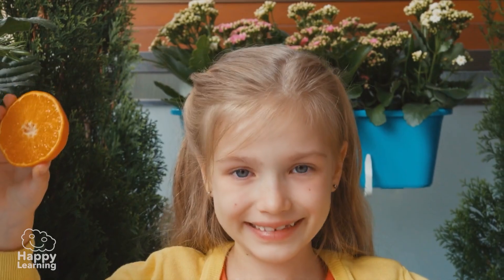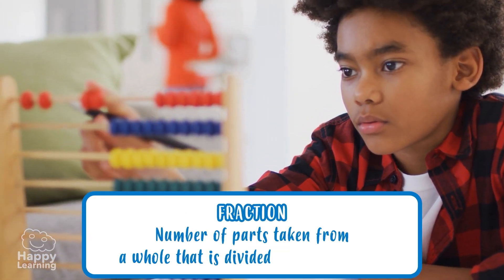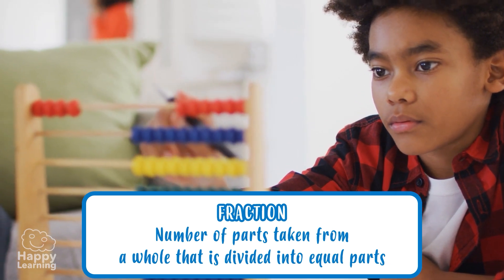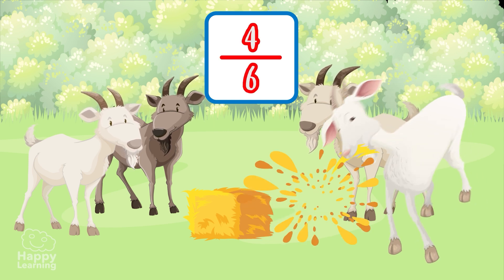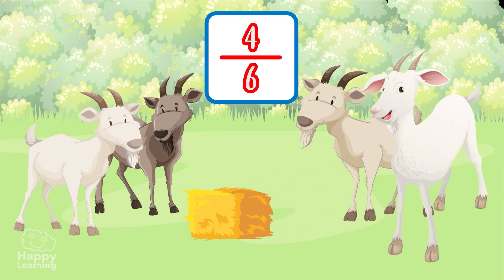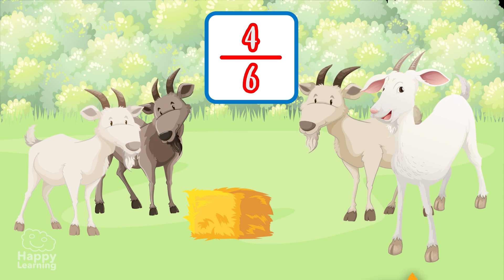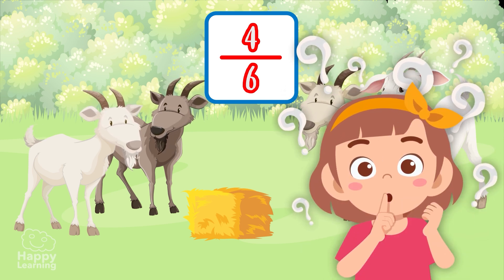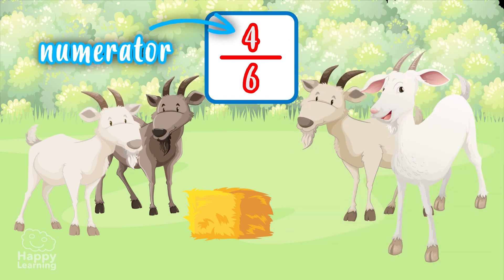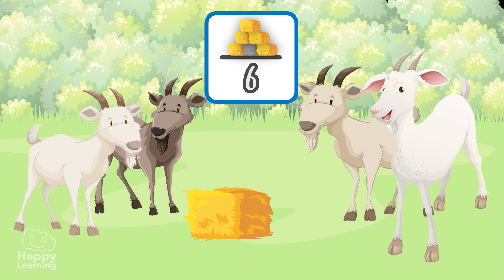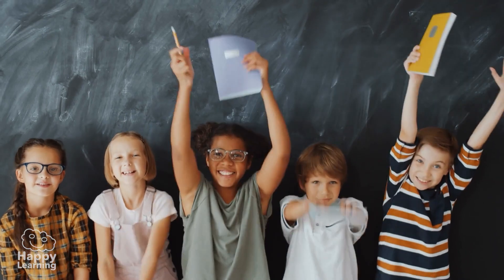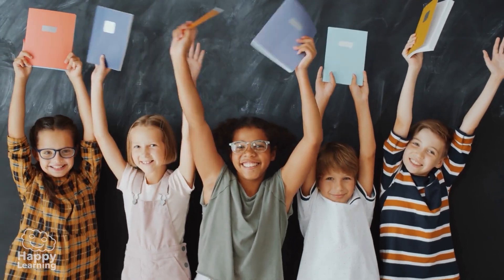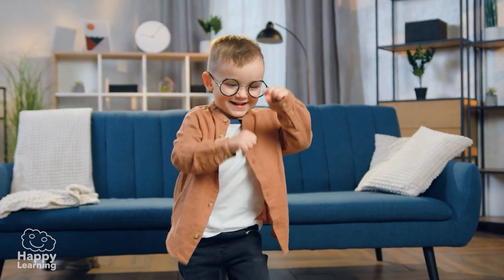Now we know that a fraction represents the number of parts we take from a whole number that is divided into equal parts. Wait — another goat ate another piece and changed the fraction! Which part of the fraction has changed? The numerator! Because we've now taken five parts of the whole number that was divided into six parts. Now that you know how to express and read fractions, you deserve a quarter of a chocolate to celebrate! Goodbye friends, see you next time!